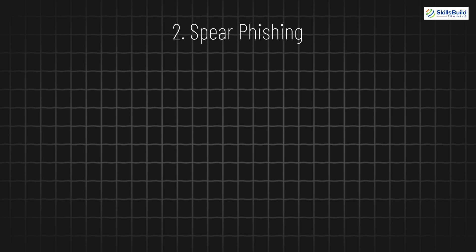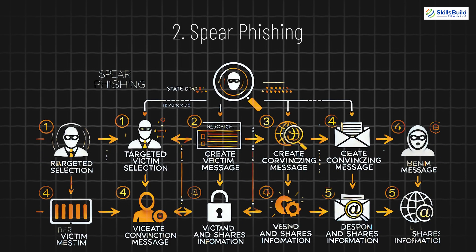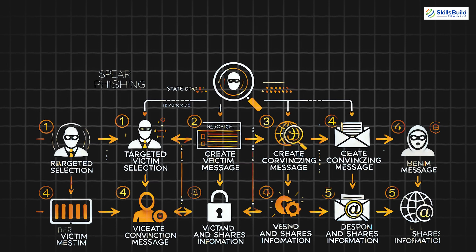2. Spear Phishing. Spear phishing is a more targeted attack. Instead of sending generic messages, hackers research their victims to make the emails or messages appear highly personal and convincing. This can often lead to more successful attacks on specific individuals or companies.